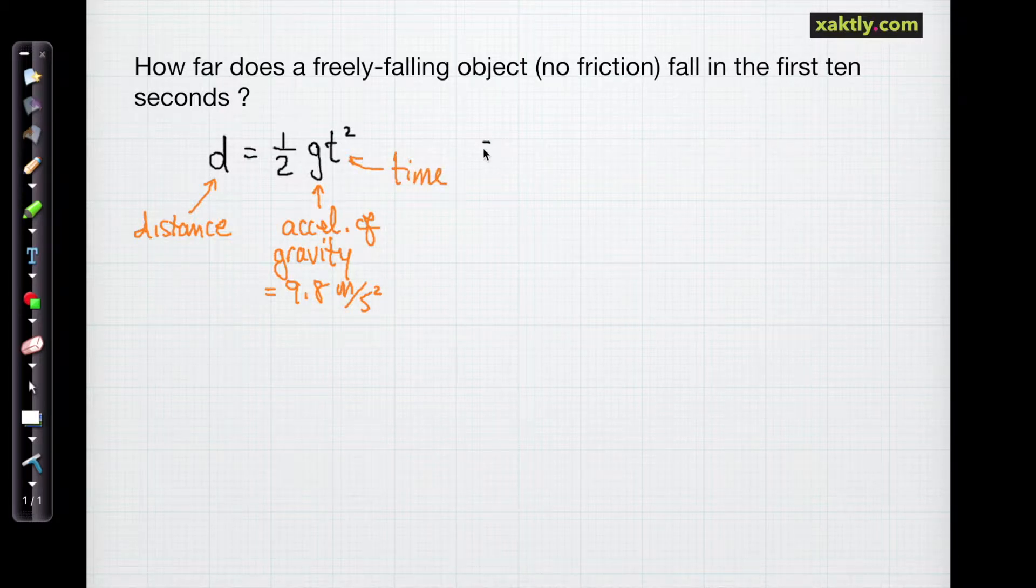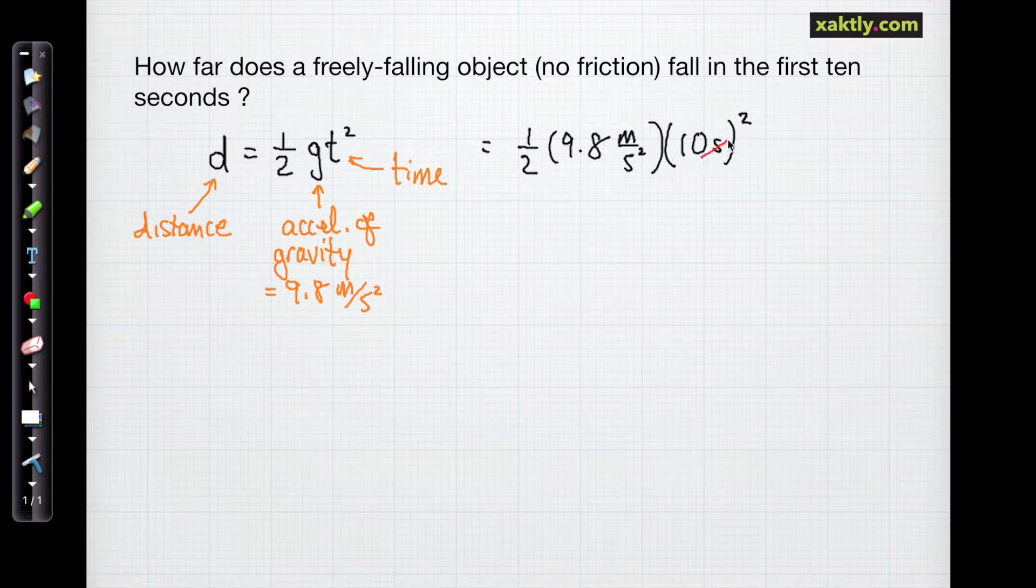And this problem asks how far does an object fall in the first 10 seconds of free fall. That's assuming that we don't have any friction. So we just plug into this to solve for the distance: 1/2 times 9.8 meters per second squared times 10 seconds squared. The seconds squared cancel out.